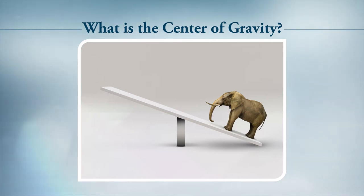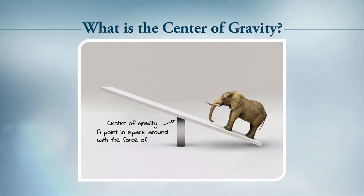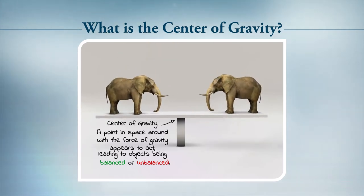The seesaw rotated around the pole in the ground at the midpoint. That pole serves as the seesaw's center of gravity, a point in space around which gravity acts. If the objects were the same size and mass — two elephants, for example — then the seesaw would be balanced and not rotate.